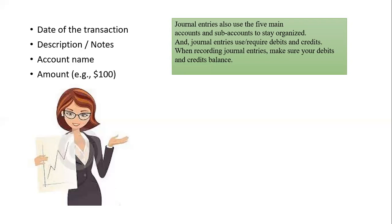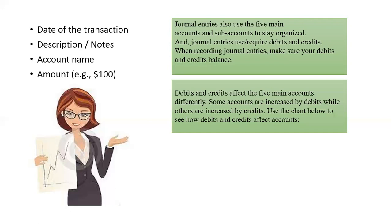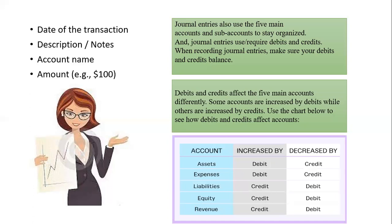Journal entries use required debits and credits. When recording journal entries, make sure your debits and credits are balanced. Debits and credits affect the five main accounts differently — some accounts are increased by debits while others are increased by credits. Assets are increased by debit and decreased by credit. Expenses are increased by debit and decreased by credit. Liabilities are increased by credit and decreased by debit. Equity is increased by credit and decreased by debit. Revenue is increased by credit and decreased by debit.